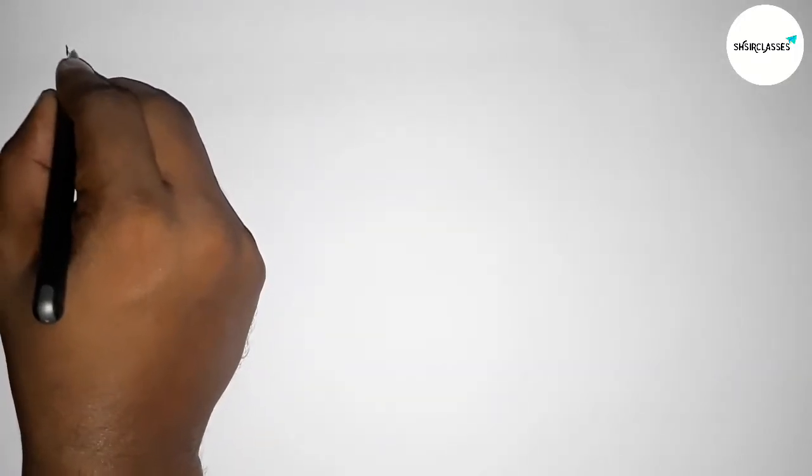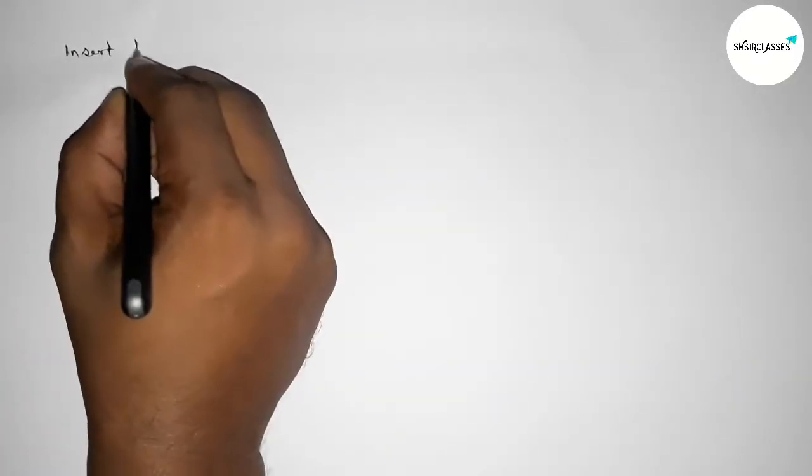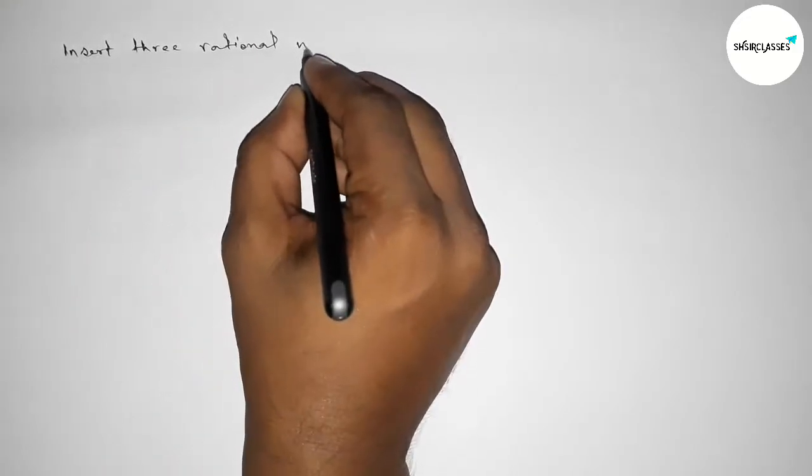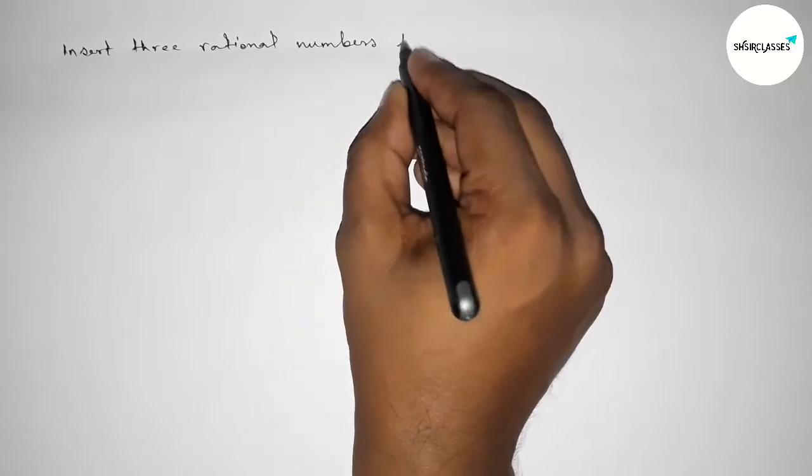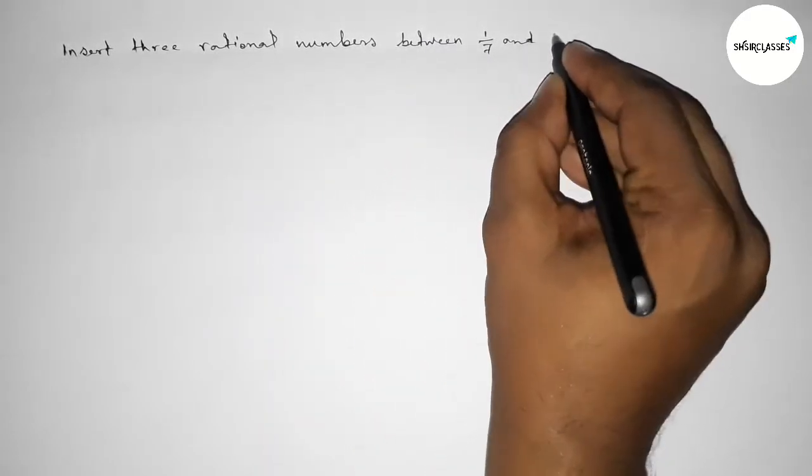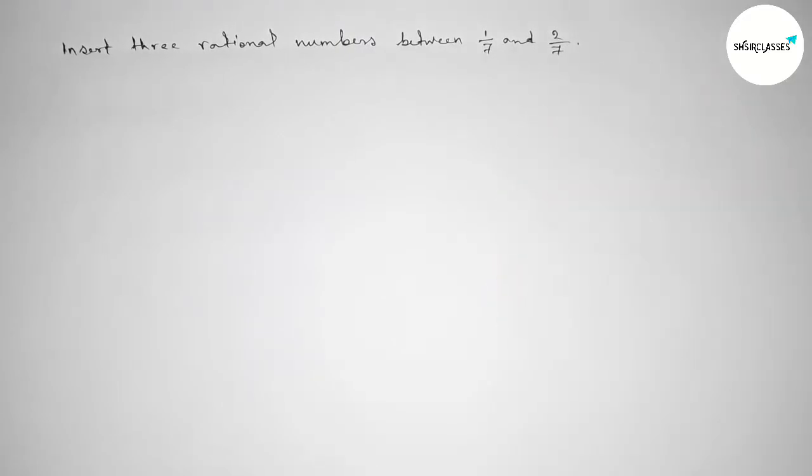Hi everyone, welcome to SI Share Classes. Today in this video we have to find out three rational numbers between 1 over 7 and 2 over 7 in easy way. So let's start the video.